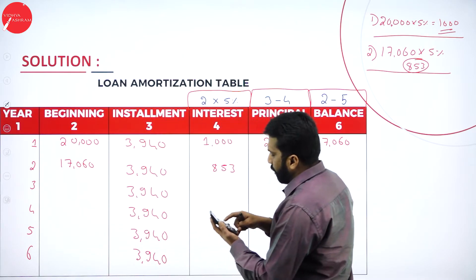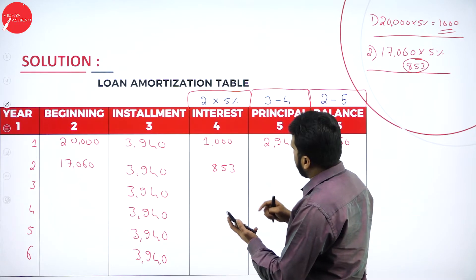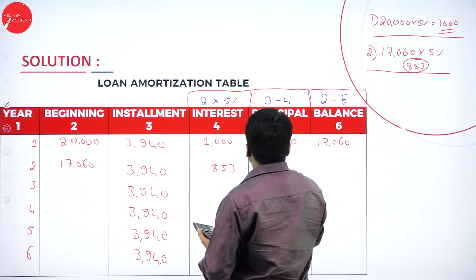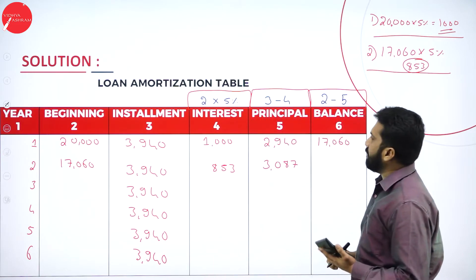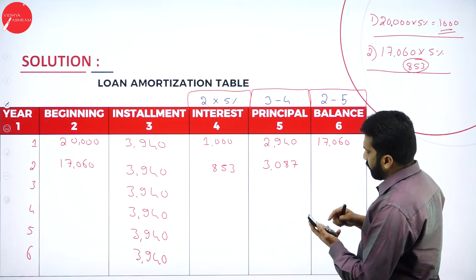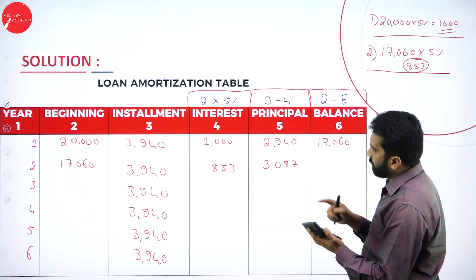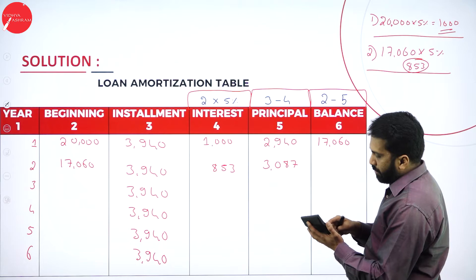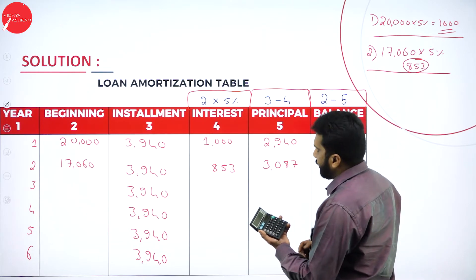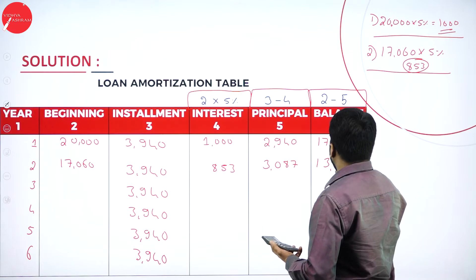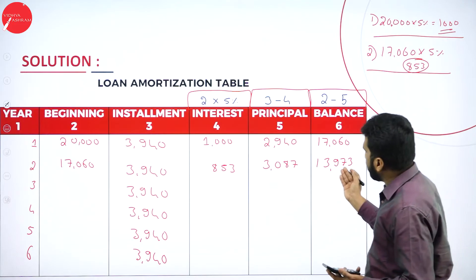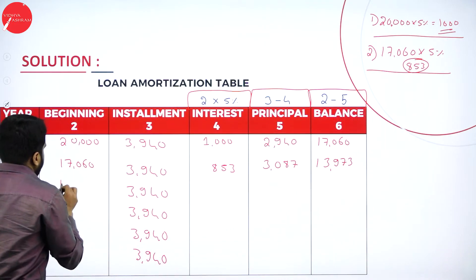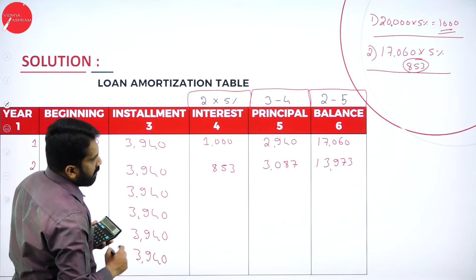For year 2 principal: 3,940 minus 853 gives 3,087. For the balance: 17,060 minus 3,087 gives 13,973. Year 2 is now completed, and the beginning balance for year 3 copies as 13,973.